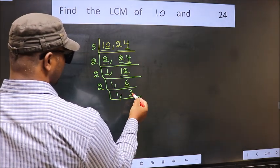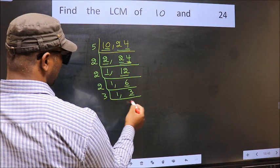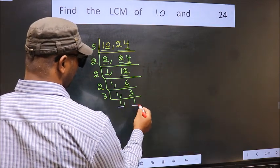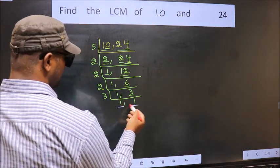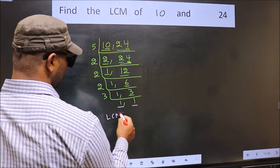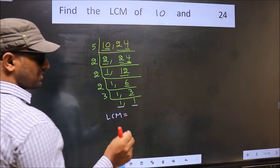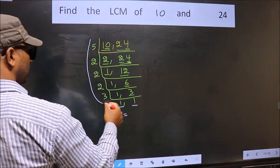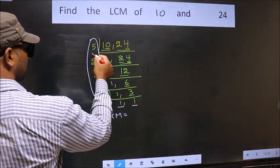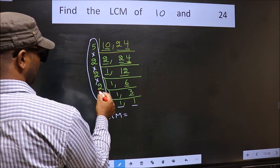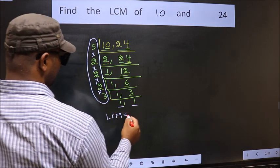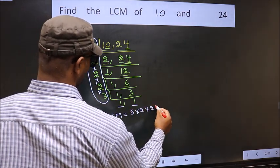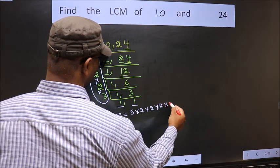Now we have 3. 3 is a prime number, so 3 times 1 is 3. So we got 1 in both places. So our LCM is the product of these numbers.